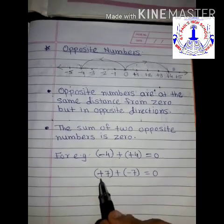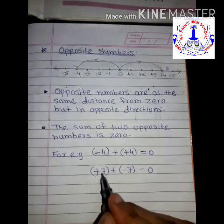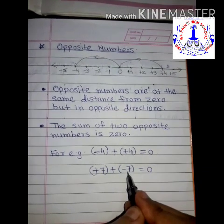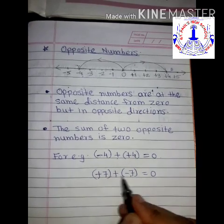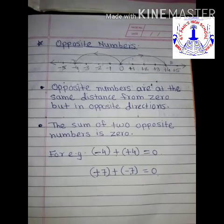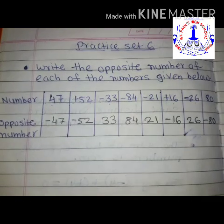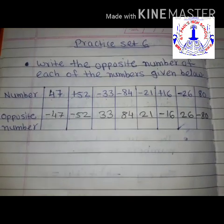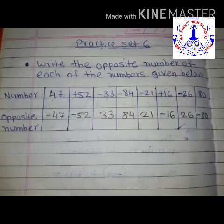Again, taking plus 7 and minus 7 — both are opposite numbers, and if you add them, the sum is 0. Hope you all understood what opposite numbers are.